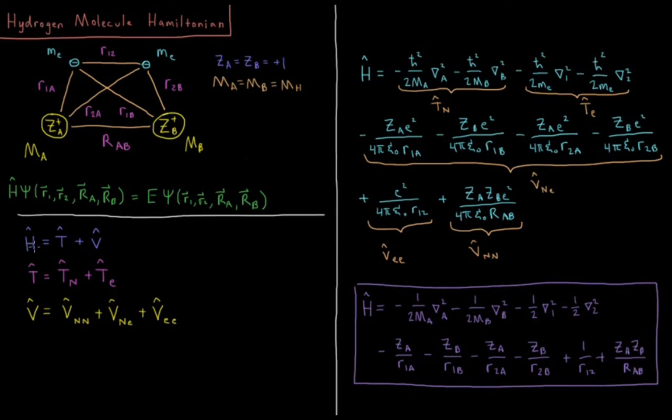So our Hamiltonian, as always, is equal to the kinetic energy plus the potential energy. Kinetic energy is equal to the kinetic energy of the nuclei plus the kinetic energy of the electrons. And the potential energy is equal to the potential energy between pairs of nuclei plus the potential energy between nuclei and electrons, all four cases of that, plus the potential between pairs of electrons.